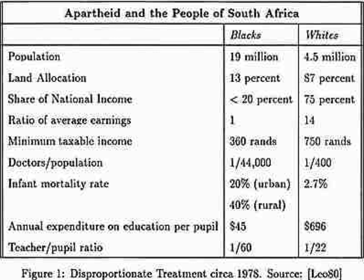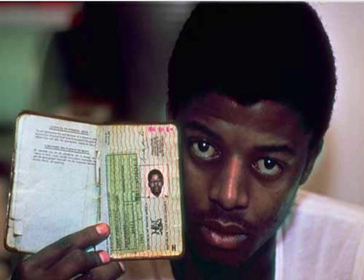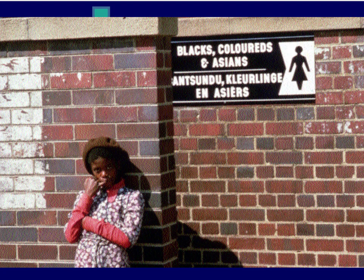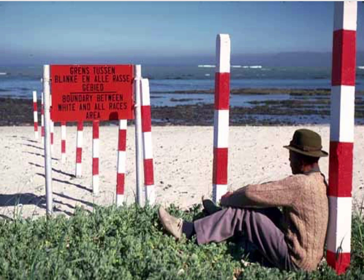Black police were not allowed to arrest whites, even if they committed a crime in a black area. Blacks were not allowed to buy alcohol. Most homelands rarely had plumbing or any type of electricity. These are images of men holding their passbooks, showing how everything was separated and segregated.